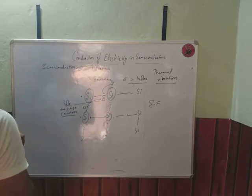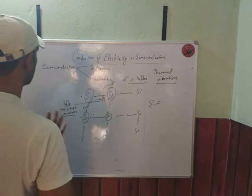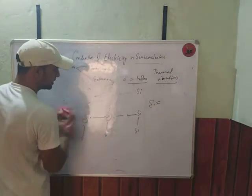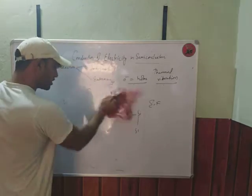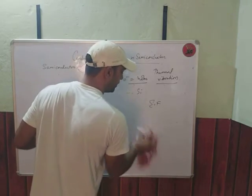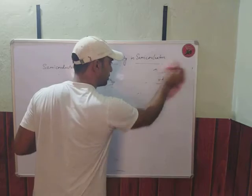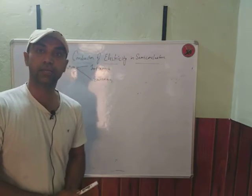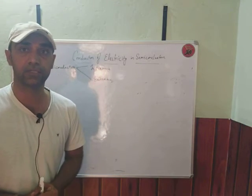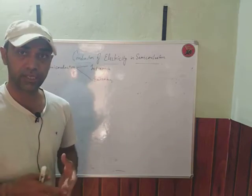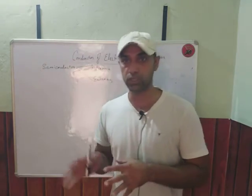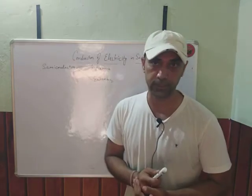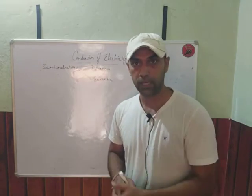Now we will talk about extrinsic semiconductor crystals. For commercial use, we need to increase the conductivity level. Increasing temperature raises conductivity only to a limit, so if we want to increase the conductivity level of a semiconductor for use in electronic appliances, we need another approach. There is a process called doping.